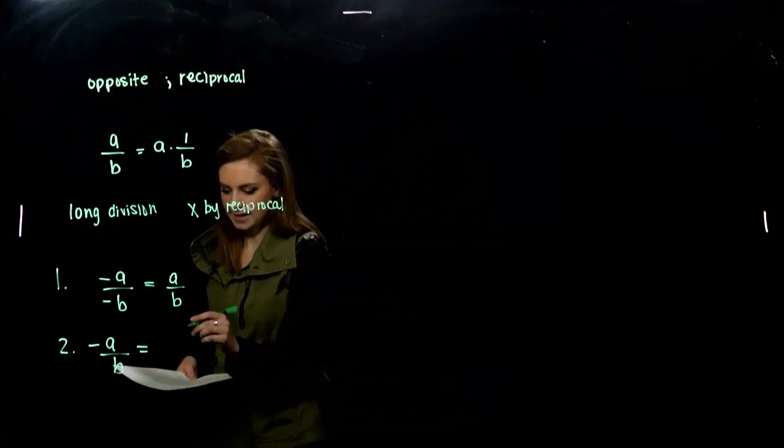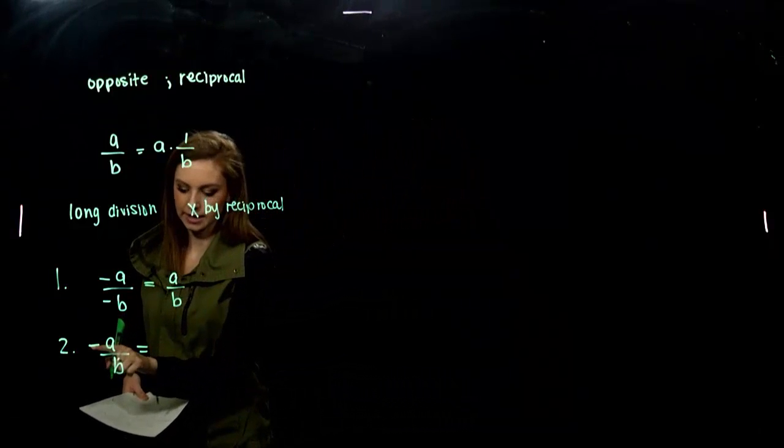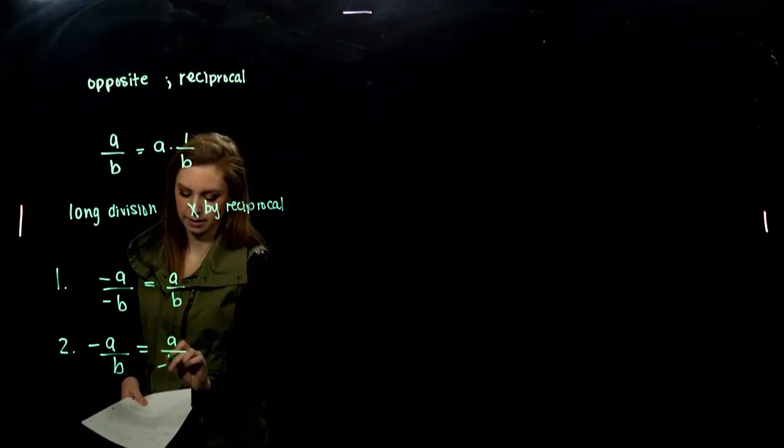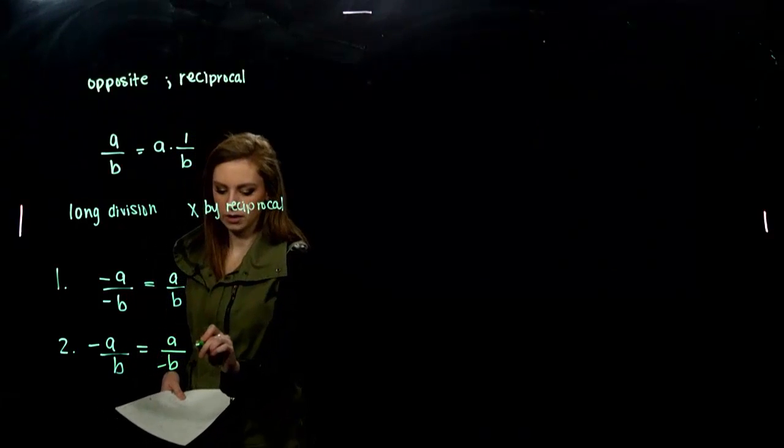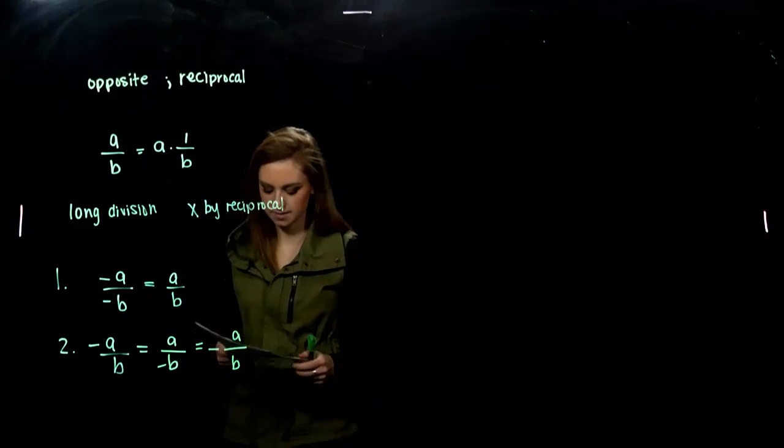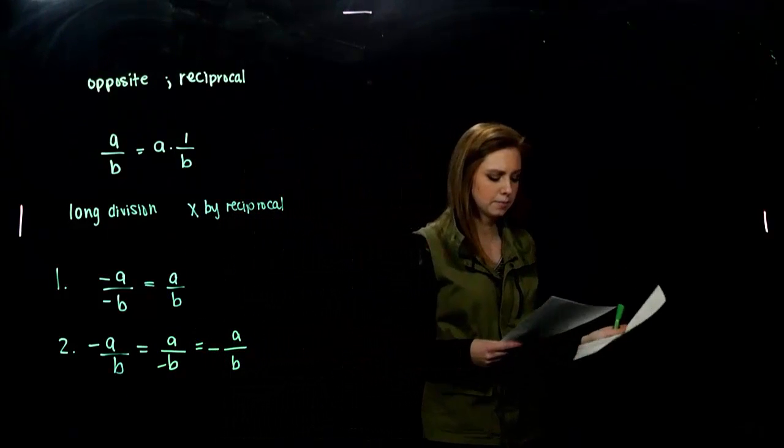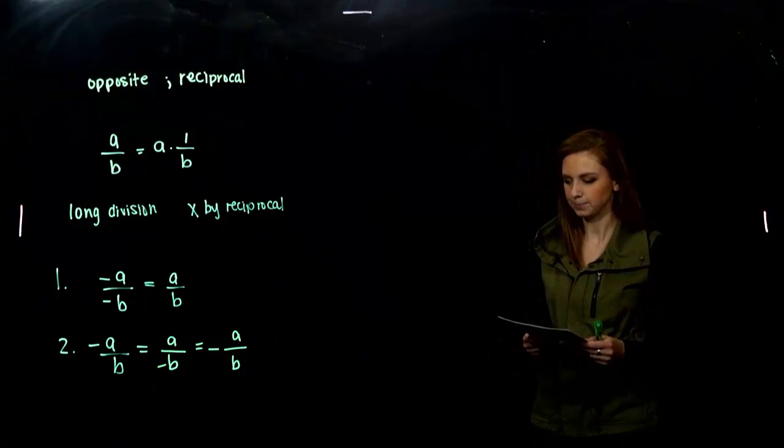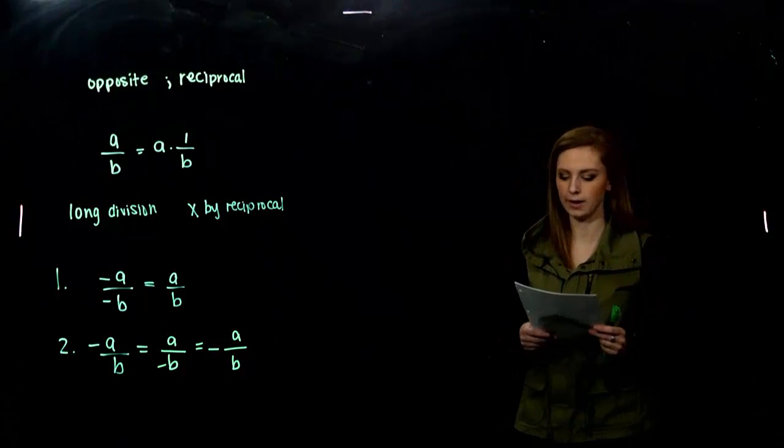So, I could either say, again, we can assign a negative to either the top or to the bottom. Right now, it's given to the top. So, I could also give it to the bottom. And, that's equivalent. Or, I could throw it right out front. They all mean the same thing. So, being able to jump between those equivalent forms of a number are very important.